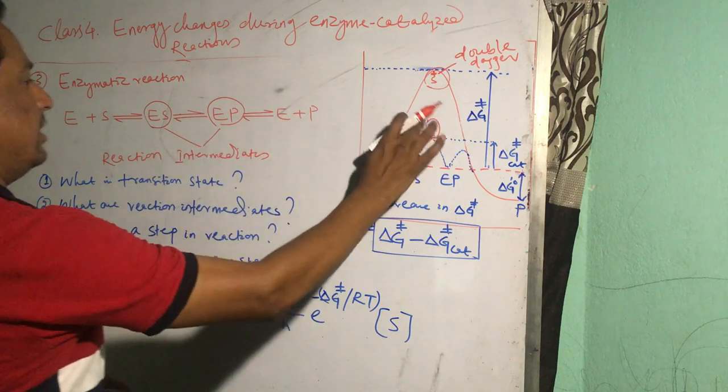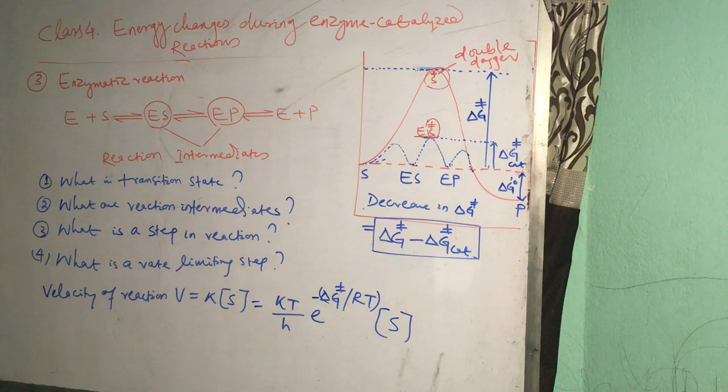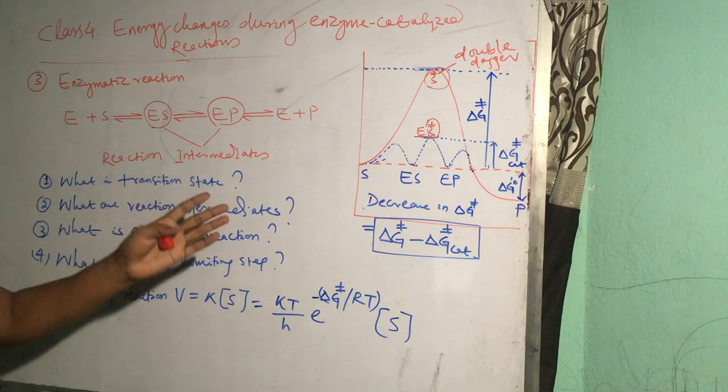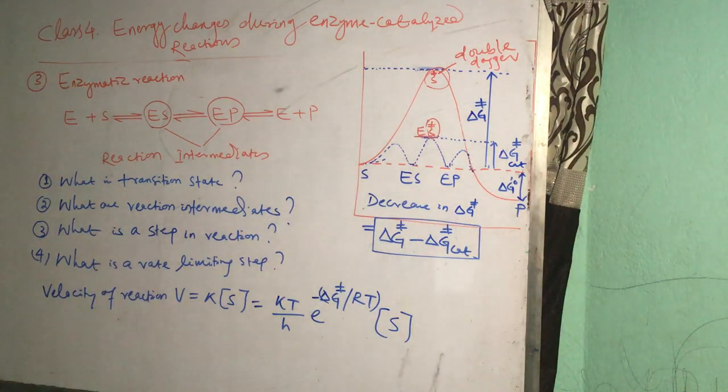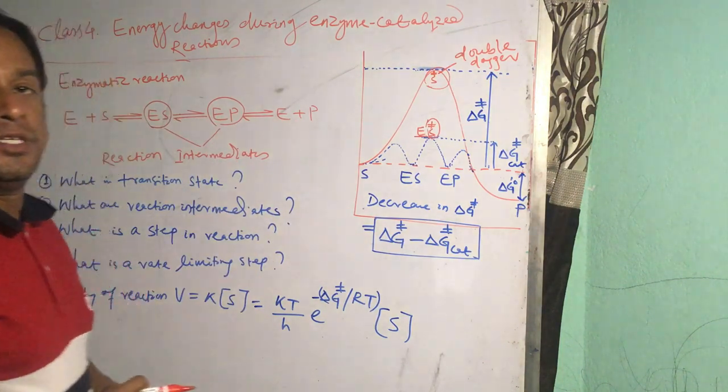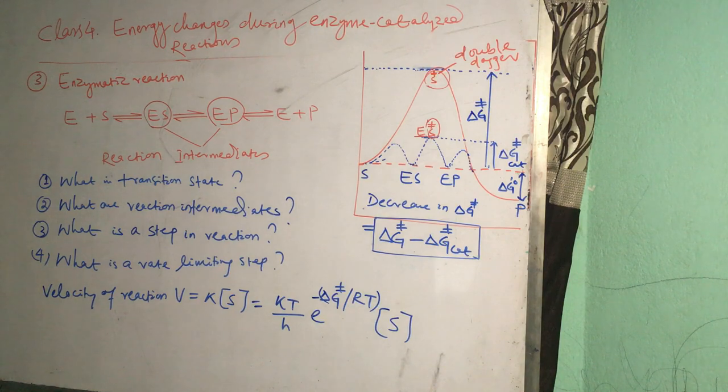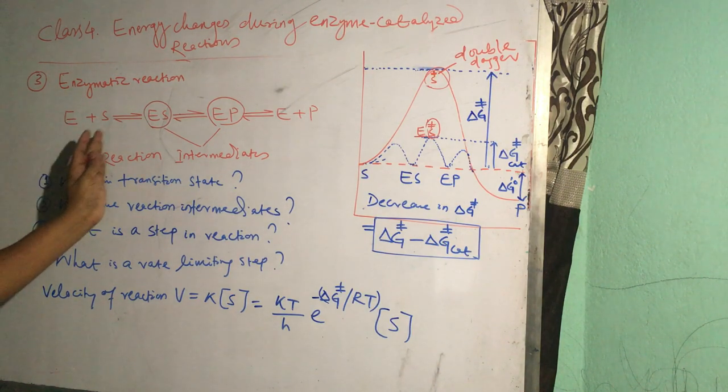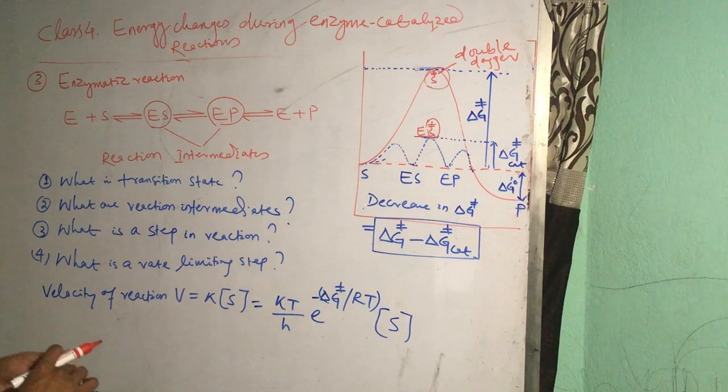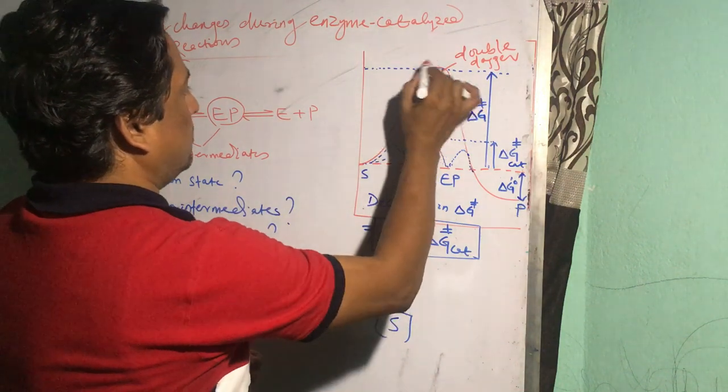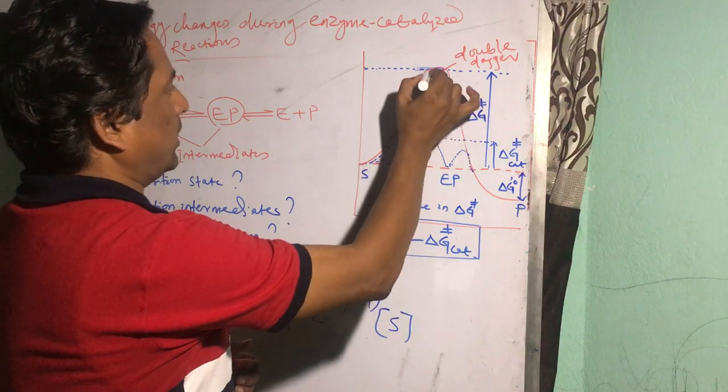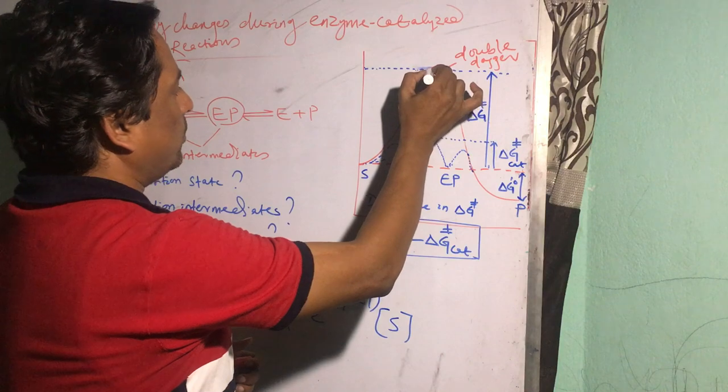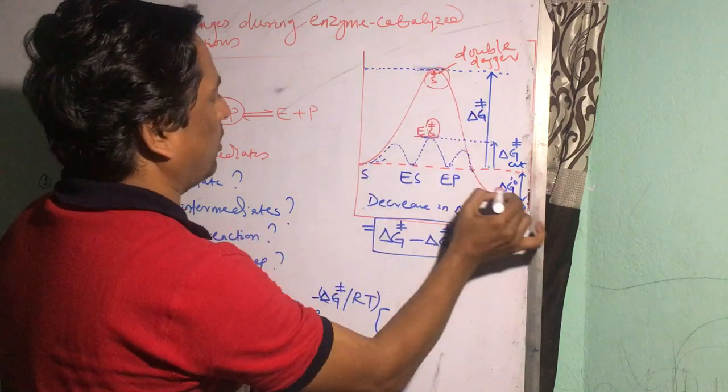So the transition state here is not a stable species. It is highly short-lived, but it can't be purified or imaged as such because it is a fleeting species which is created during the conversion of substrate to product. Here just the charge, bond energy, et cetera becomes optimum so that it can now disintegrate to either substrate side or product side.